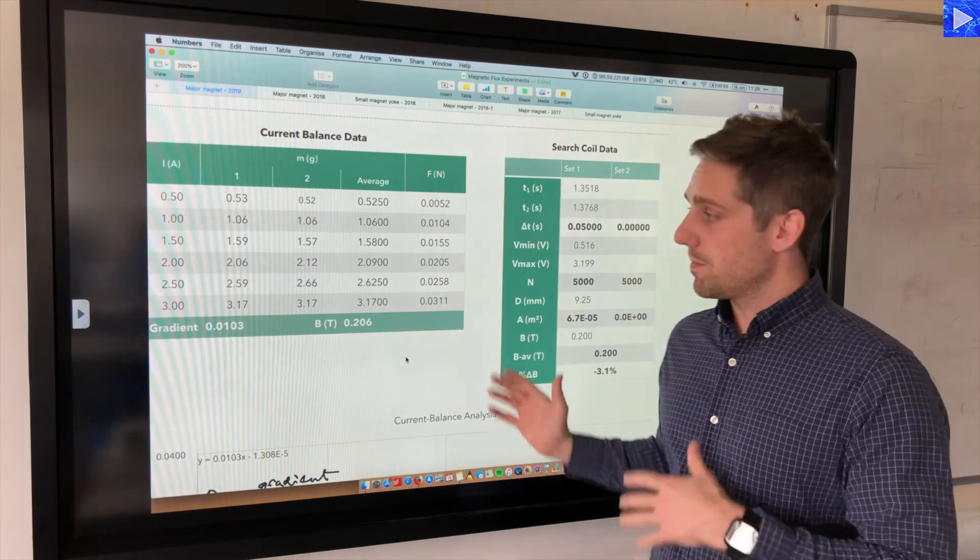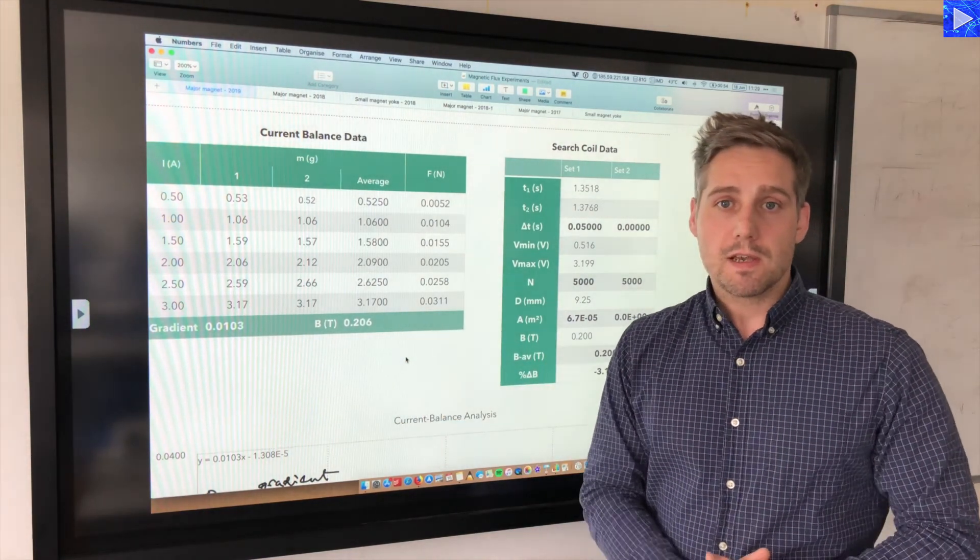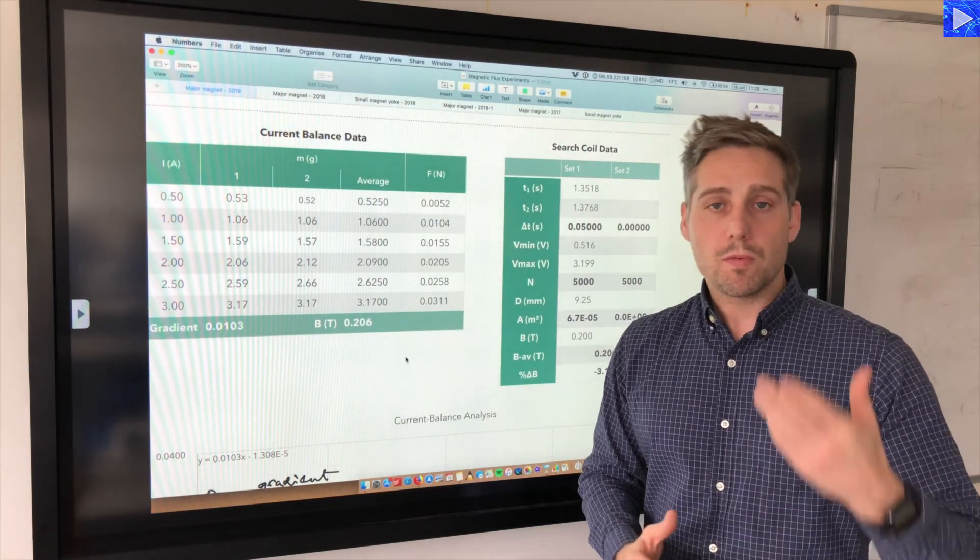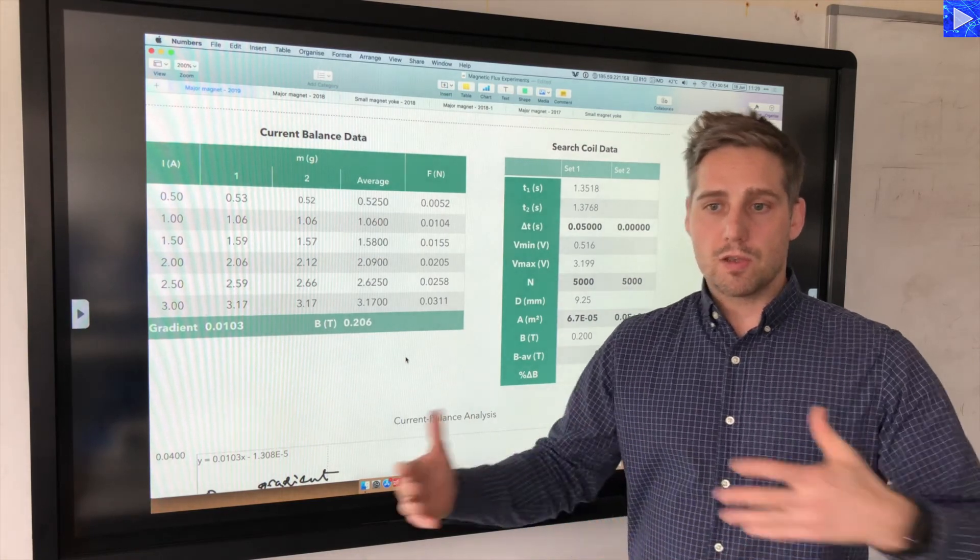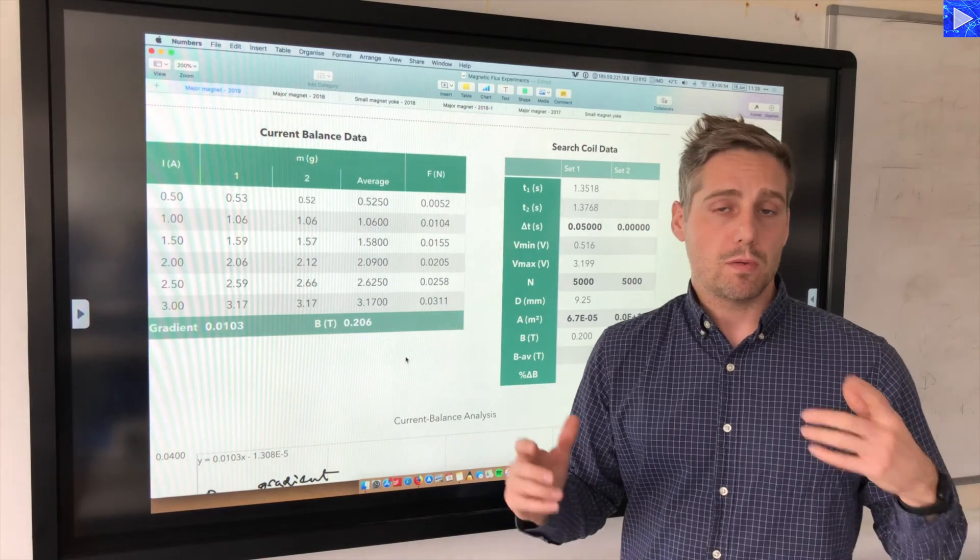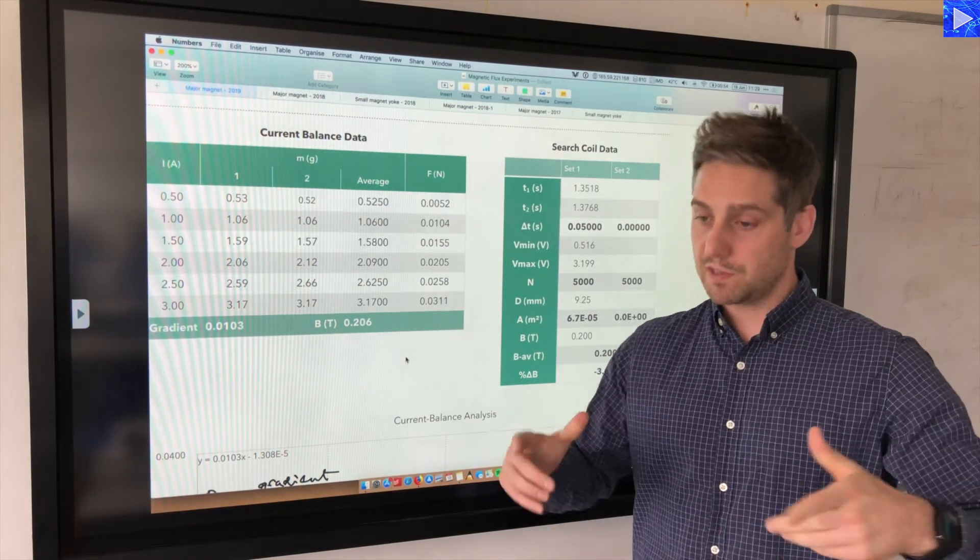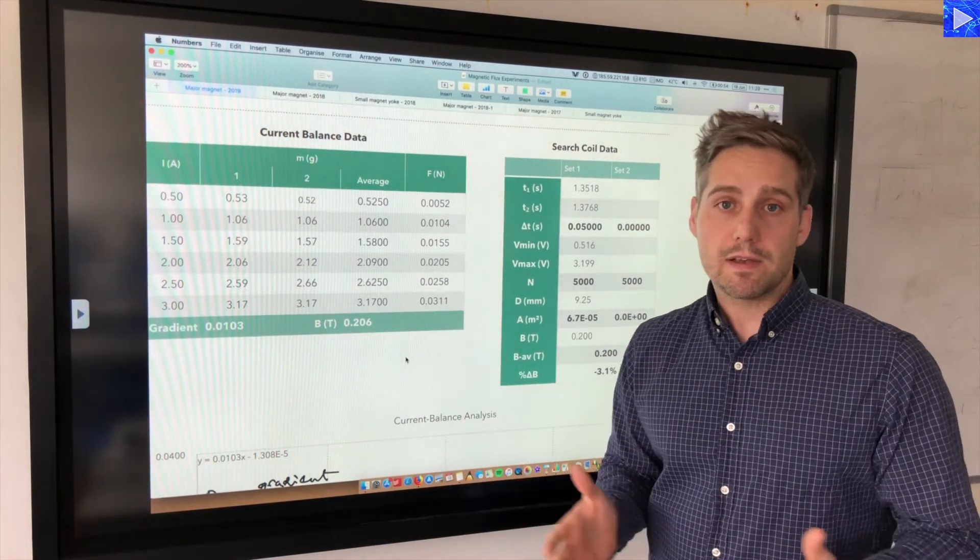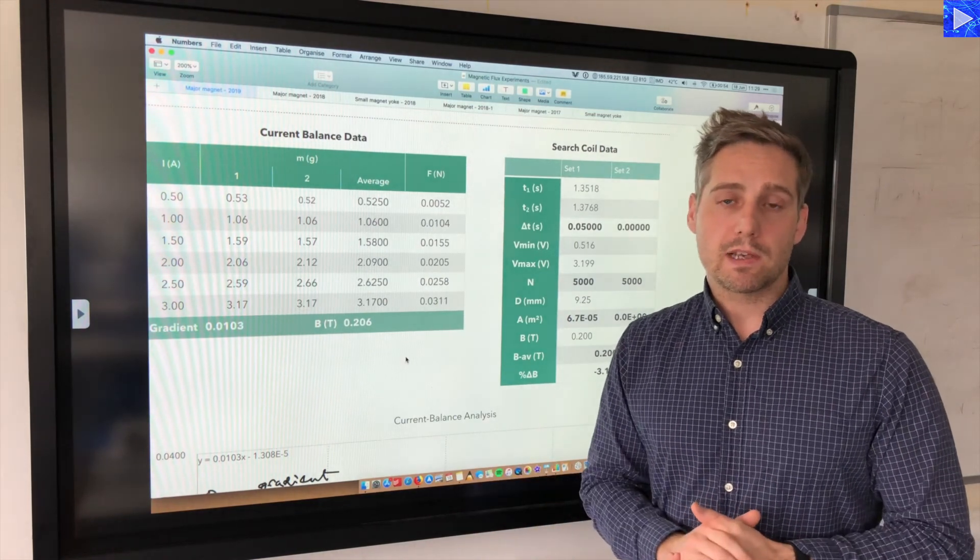There we go, that's the analysis of the search coil and I've compared it with the current balance data. So if you've watched that video, you can now see some corroboration. If you haven't seen that video, you can check that video out. I'll put the video link up so you could see that if you want to see how that experiment is done.